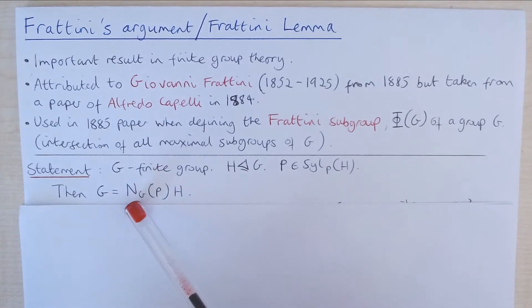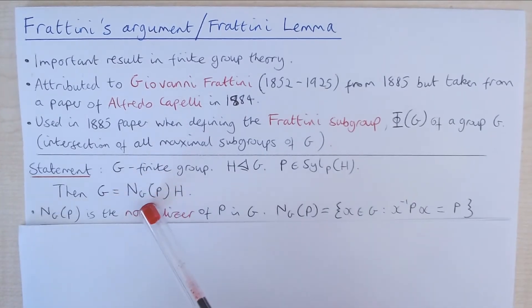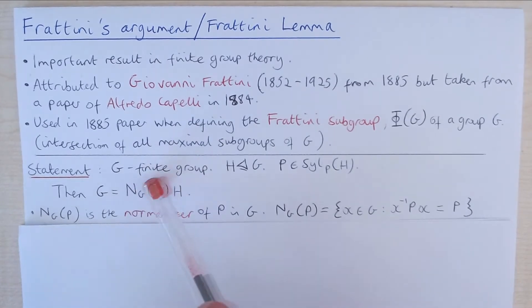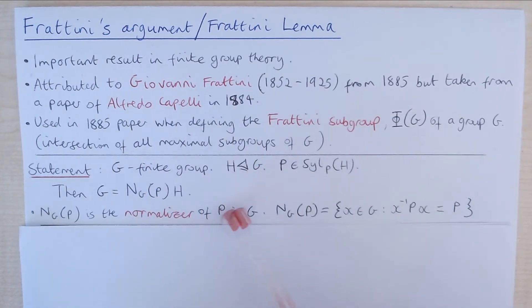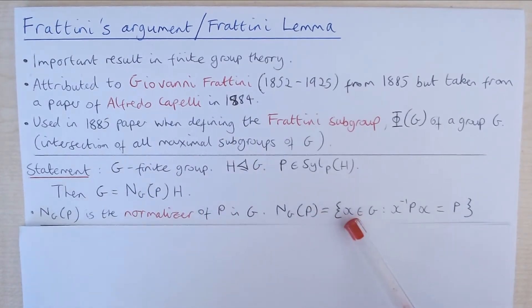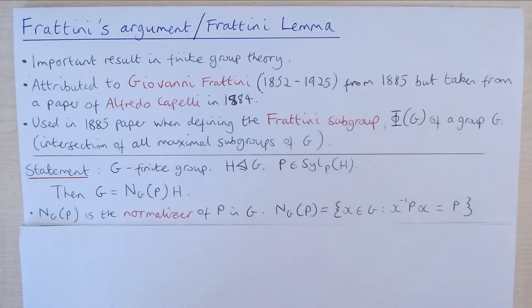Then the claim is that G equals the normalizer of P in G times H, where this is the product of these two subgroups as group subsets, and where the normalizer of P in G is simply the set of elements X in G such that when you conjugate the subgroup P by X, you just get P back.